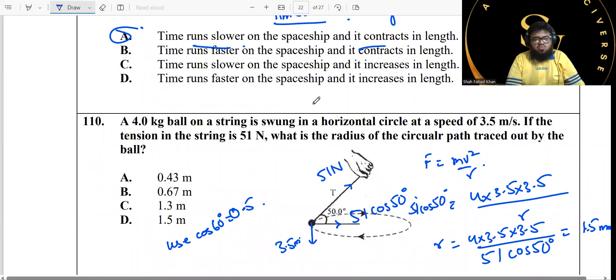A 4.0 kg ball on a string is swung in a horizontal circle at a speed of 3.5 meters per second. Tension is 51 N. What is the radius of the circular path traced out by the ball? Now, we just need to calculate the radius in this particular case. So basically, just look at it. This is 51, this is the tension. You can calculate the centripetal force over here using 51 cos of theta. You definitely calculated that as well.